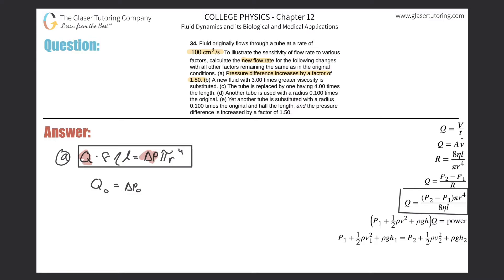Because I'm creating a ratio, I'm now going to use Q of the new value divided by the change in pressure — the pressure differential — of the new value. It tells us in letter A that the pressure difference increases by a factor of 1.5.